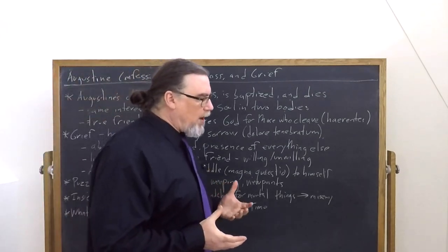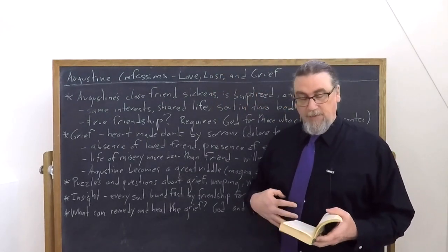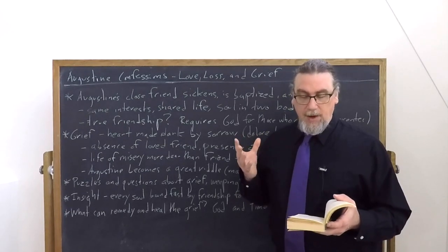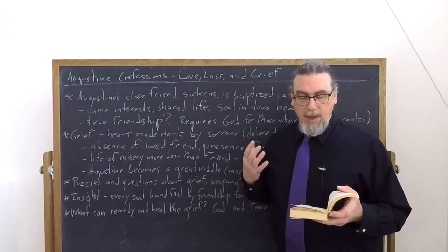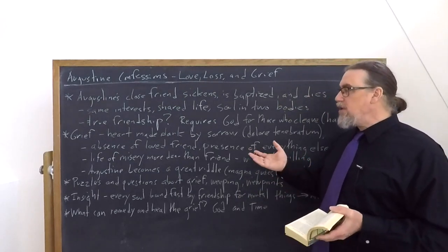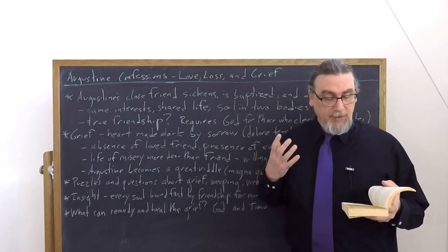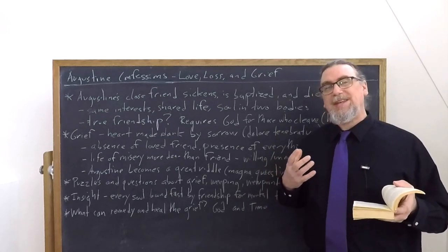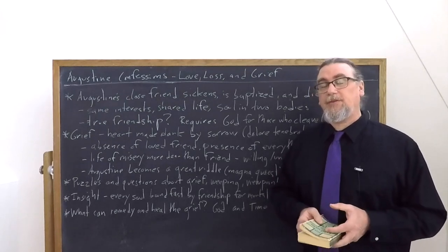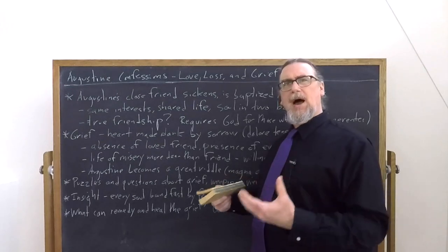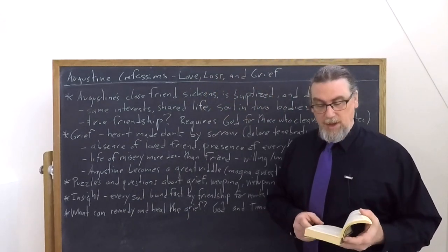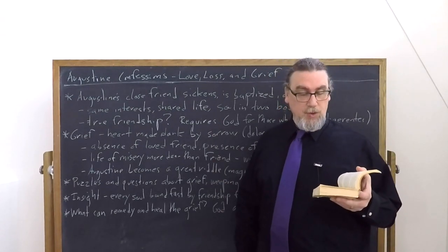Augustine finds himself caught within a, we might say, emotional or psychological and even volitional dynamic where he's befuddled. And he talks about this in chapter six. He says, I wept bitterly and I found rest in my bitterness. So wretched was I that I held the life of wretchedness or misery, miseria in Latin, being unhappy. So miserable was I that I found the life of miserable to be more dear, more desirable to me than my friend himself.